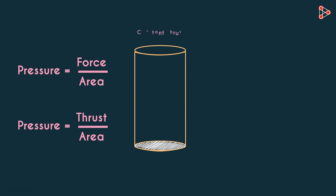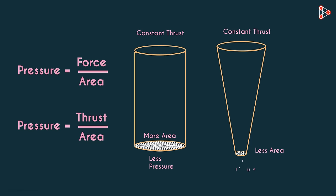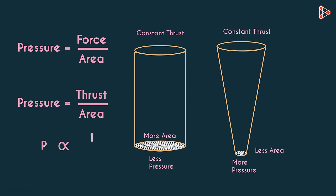If the thrust is constant and the area is more, then the pressure will be lesser. And if the area is less, then the pressure will be more. Pressure is inversely proportional to the area on which the thrust is applied.